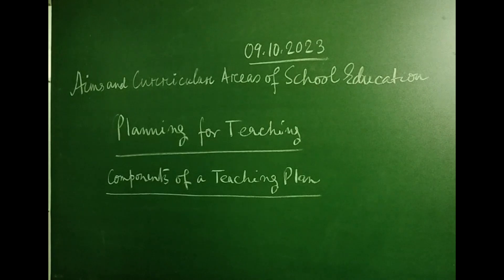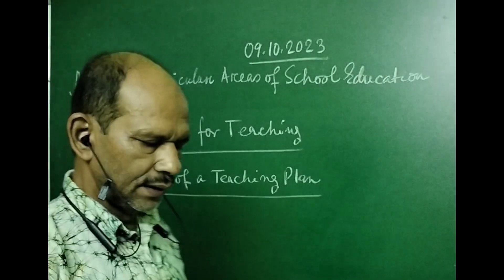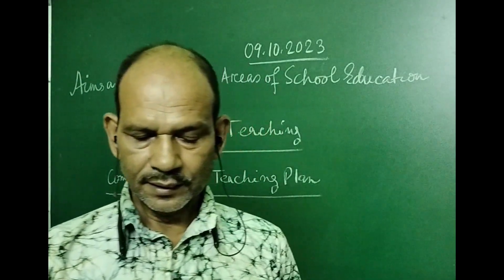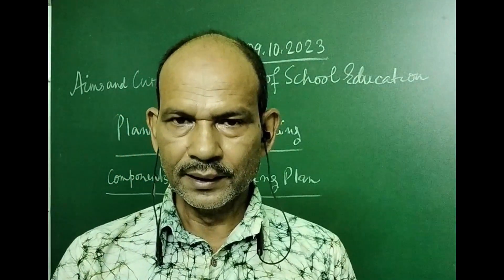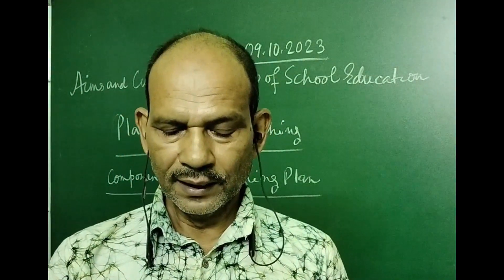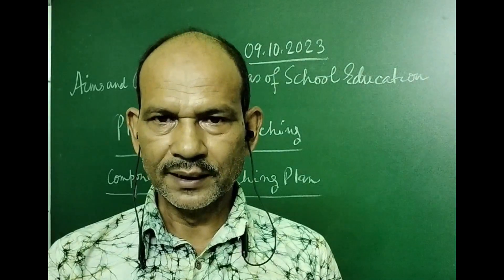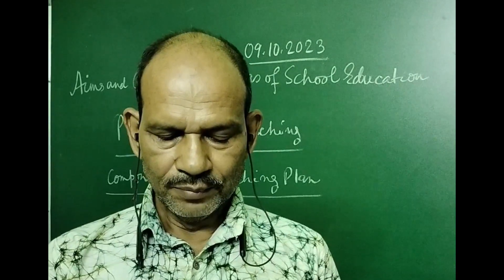C. Duration and sequence of activities. D. Content and materials to use in the activities. E. Classroom arrangements — for example, seating, displays, and arrangement of materials.